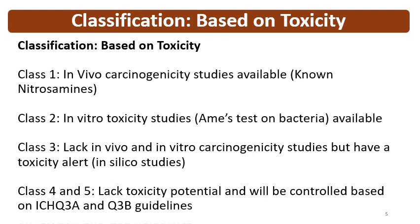Class 2 impurities have in vitro toxicity studies — Ames bacterial mutagenicity studies — available. Class 3 lacks both in vivo and in vitro carcinogenicity studies but has a toxicity alert from in silico studies — meaning based on QSAR models, Class 3 impurities have an alert for toxicity. Classes 4 and 5 impurities are less toxic; they lack toxicity potential and will be controlled based on the ICH Q3A and Q3B guidelines.